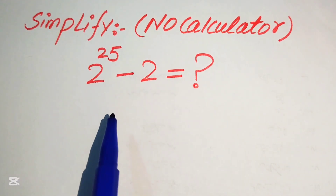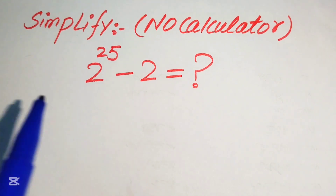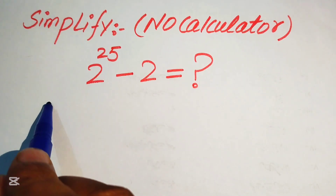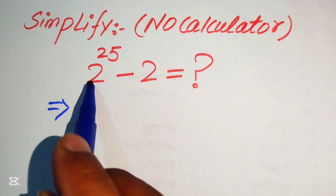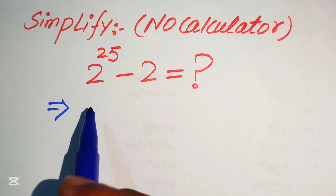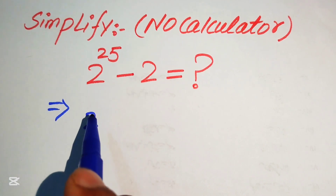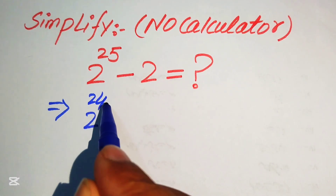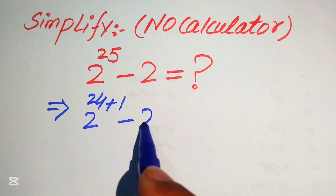We will show all of the working on this paper. The very first step: we need to focus on the exponent of this term. The exponent is 25, and we write this 25 as 2 to the power of 24 plus 1.